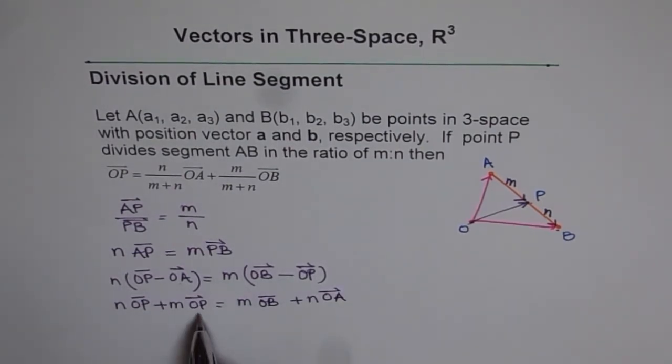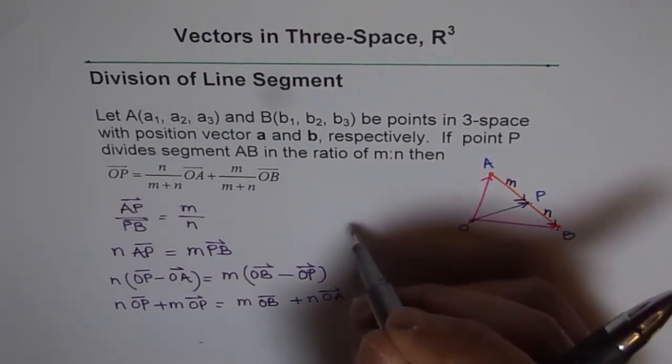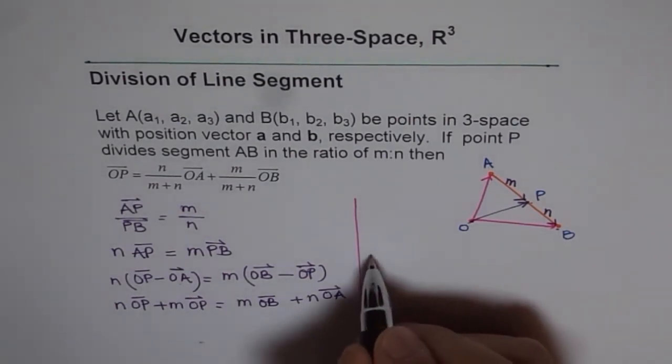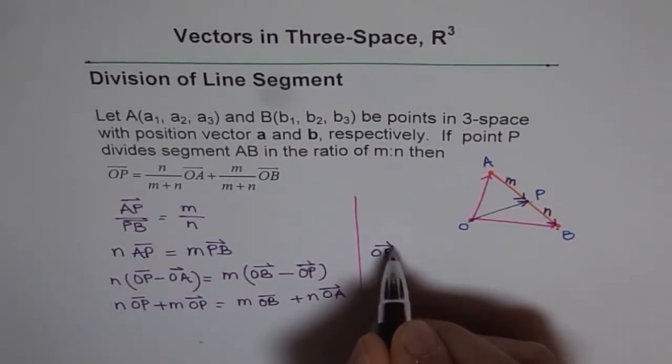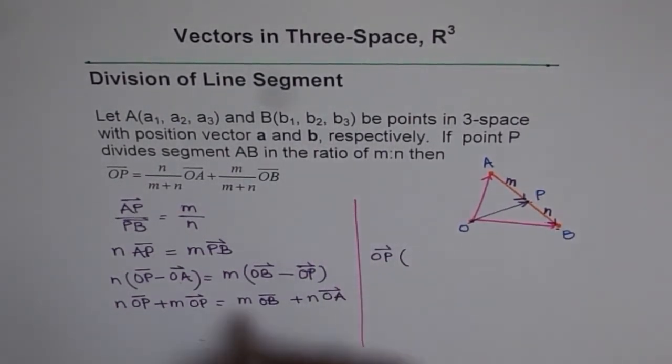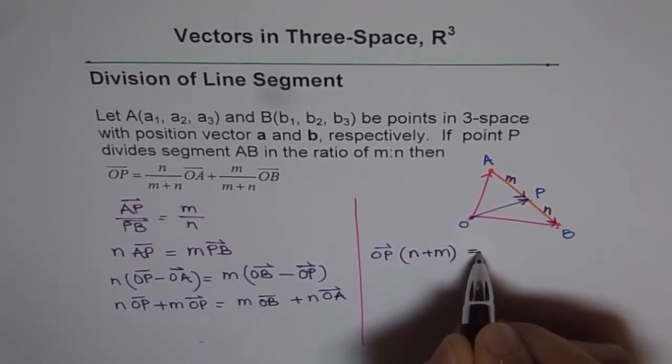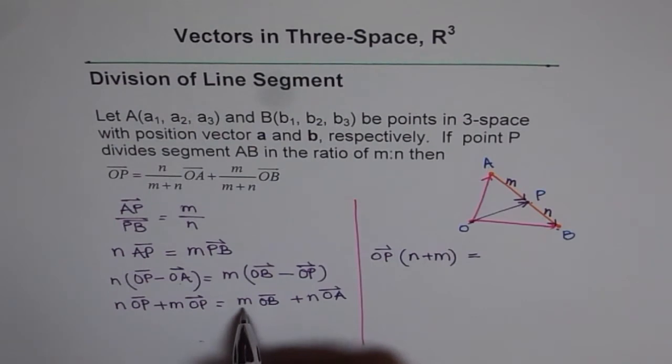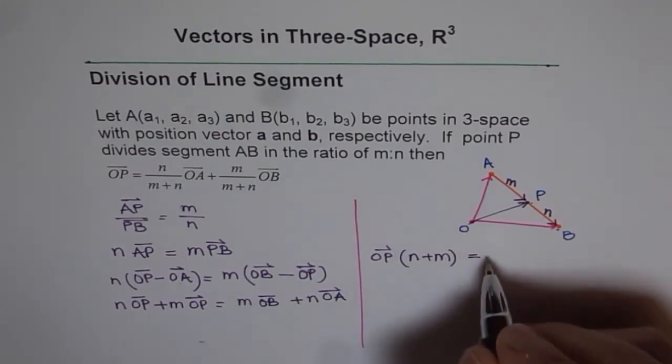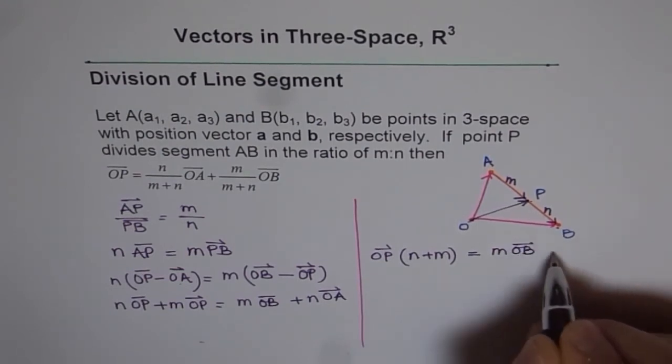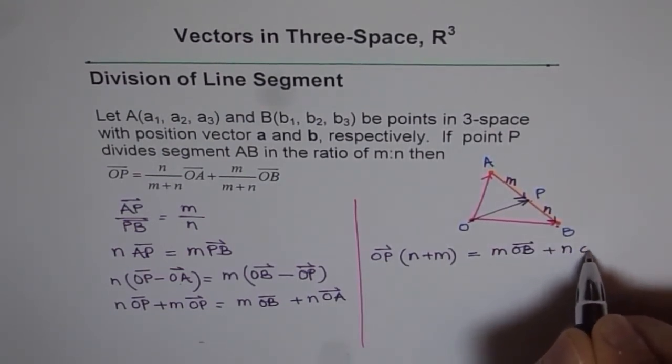Now, OP can be taken common. So we can take OP common. OP and we're left with N plus M is equal to M. So we'll write this, M times OB plus N times OA.